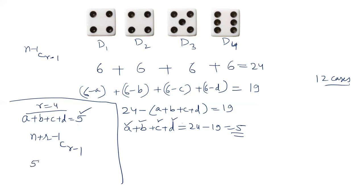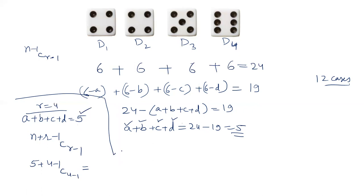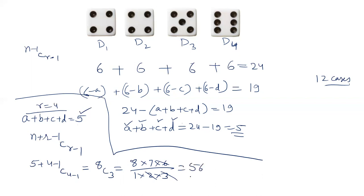Here N = 5 (the total we want to distribute) and R = 4 (the number of variables/groups). Substituting: (5 + 4 − 1) C (4 − 1) = 8C3. Calculating 8C3: 8 × 7 × 6 divided by 1 × 2 × 3 = 56.